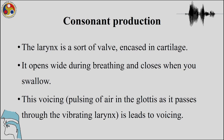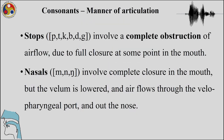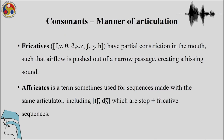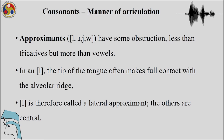Coming now to manner of articulation: stops involve complete obstruction and sudden release of air — there must be full closure for production of stop sounds. Nasals also involve complete closure in the oral cavity, but air release is through the nasal cavity. Fricatives have partial constriction and slow release — air is pushed through a narrow passage, producing a hissing sound. An affricate is a term for sequences made with the same articulator.